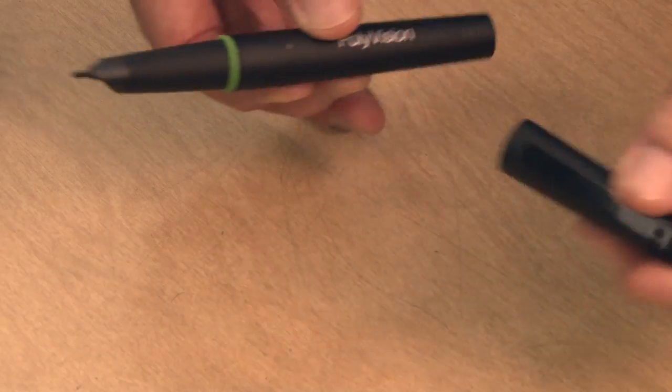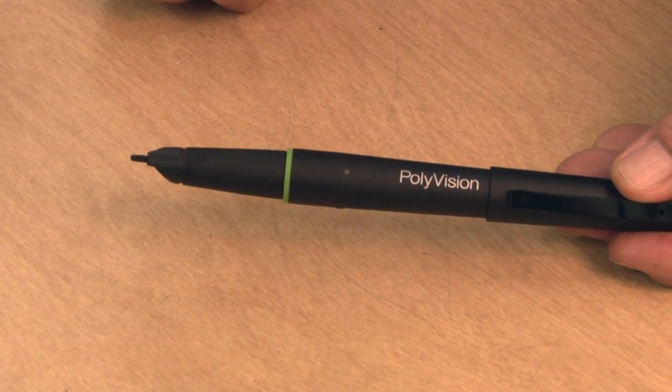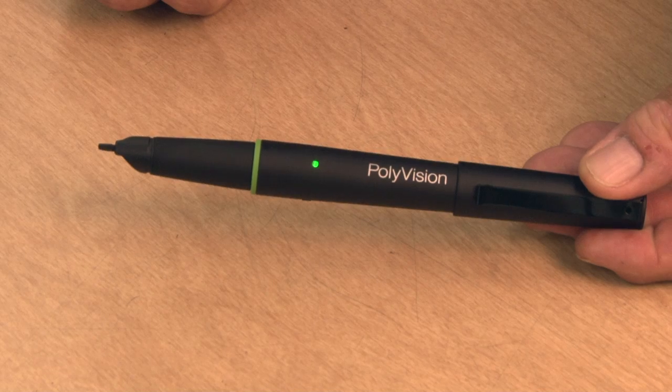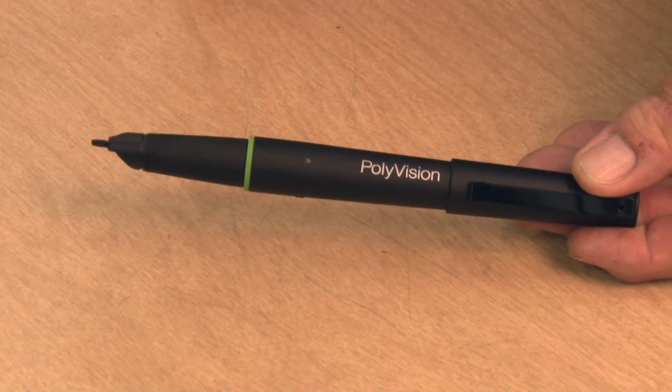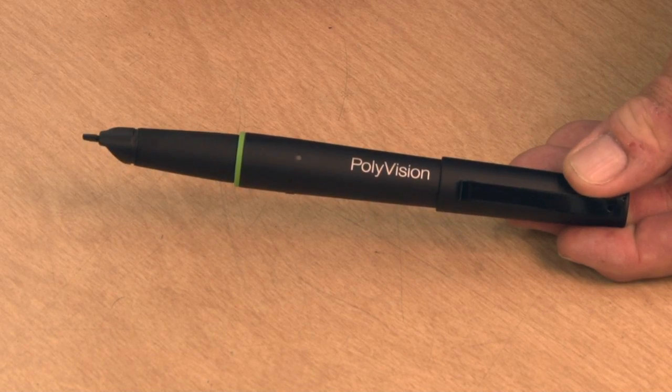If the cap, again when you pull the cap off it turns the stylus on. If the cap is left off for a period of time and the stylus has not touched the board for about six minutes, the stylus will time out and shut itself off.